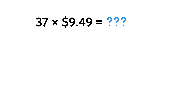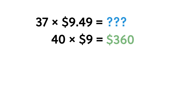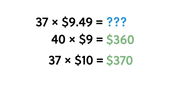There are several good ways to make this estimate. You can round 37 students up to 40 and the $9.49 price down to $9 to get an estimate of 40 times $9 equals $360. Or you can leave 37 unrounded and round $9.49 up to $10 to get an estimate of 37 times $10 equals $370. Rounding $9.49 up to $10 is not standard rounding, but $10 is a very simple number to work with and still close enough to give a useful estimate.